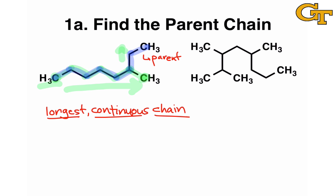The compound on the right is even trickier. We can start at any of the methyl groups when looking for the parent chain — I tend to look all the way to the left or right. Starting here and moving around, we keep going as long as we can to a carbon that bears another carbon, until we absolutely can't anymore. That process leads us to identify the chain highlighted in blue as the parent chain in this compound.